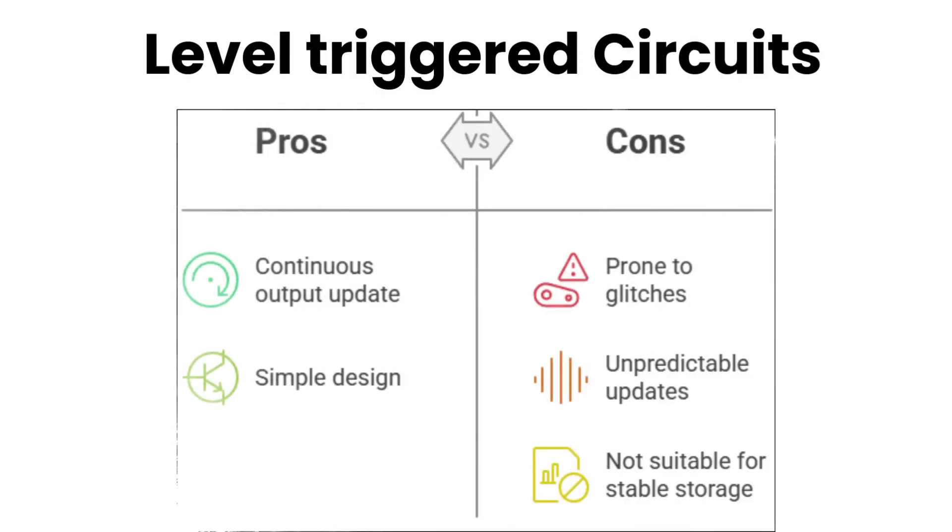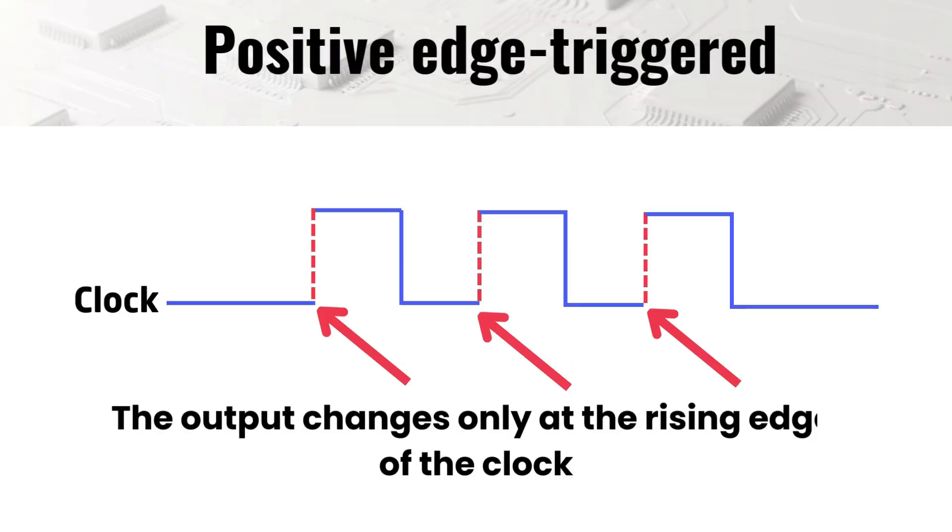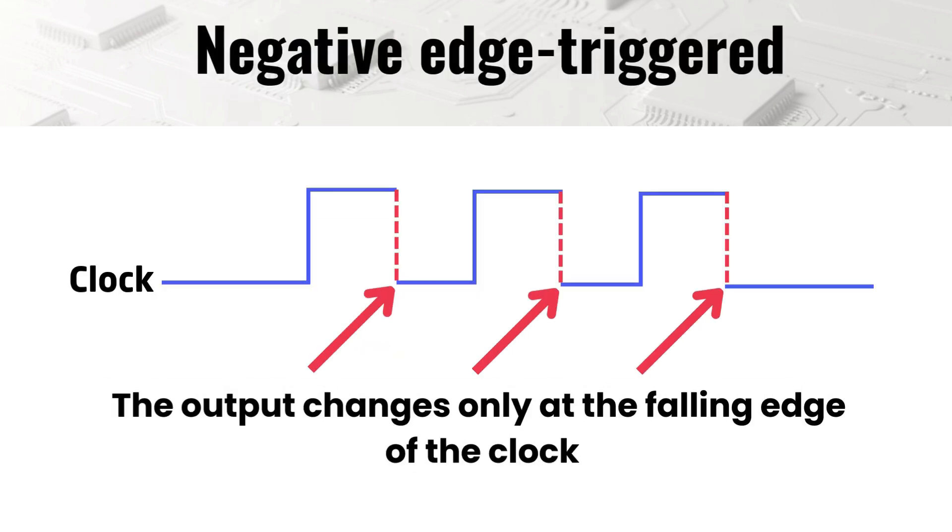These circuits are known as level-triggered circuits. In these circuits, the output continuously updates as long as the clock signal stays at a specific level. Therefore, they are prone to unpredictable updates and glitches in fast-changing systems, and that is why level-triggered circuits are not ideal for stable data storage. This lack of control is why we prefer edge-triggered circuits. In edge-triggered circuits, the output changes only at a precise transition of the clock signal, ensuring that data updates only at a single moment, preventing unintended changes and ensuring stable, predictable behavior.